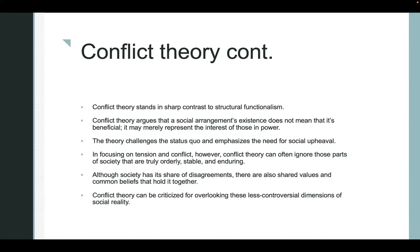Conflict theory argues that a social arrangement's existence does not mean that it's beneficial — it merely represents the interest of those in power. Think about it like this: this is not the only education system we could have. This education system filters out people into social classes; not all kids have a fair shot. Those who don't have a fair shot tend to end up in the lower classes selling their labor to make the bourgeoisie rich. Conflict theory would say, yeah, the education system is about socialization and teaching kids — but really, it's filtering them into social classes.